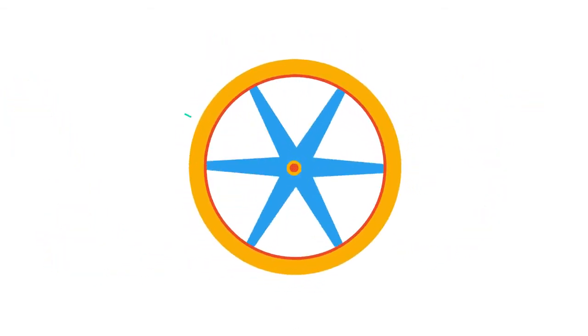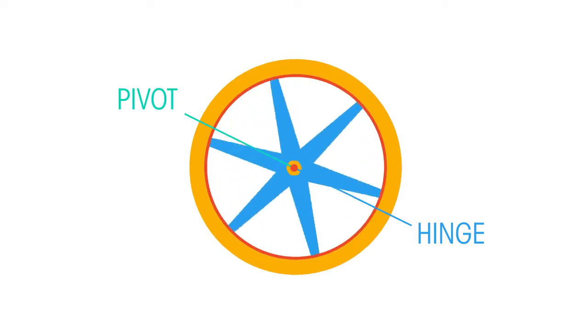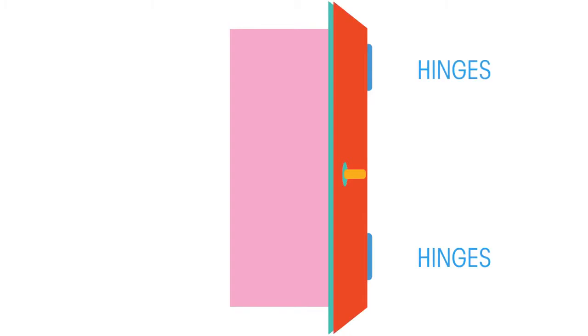A force can turn an object around a hinge or a pivot. For example, opening a door uses a turning force. The door turns around the hinges. This turning force is known as the moment of the force.